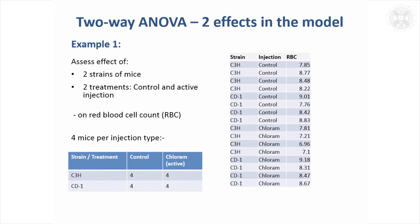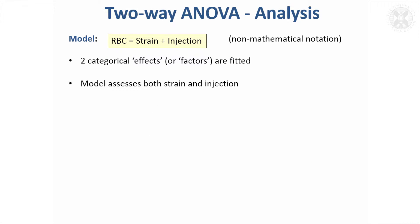So how might we use an ANOVA to investigate this? Well, instead of just having one effect in the model, we can now look at the effects of both strain and injection. This is expressing the model in a non-mathematical notation where you have the thing you're analysing on the left, and the factors you want to put into the model on the right. This model is going to assess both the effect of strain and injection in the same model.